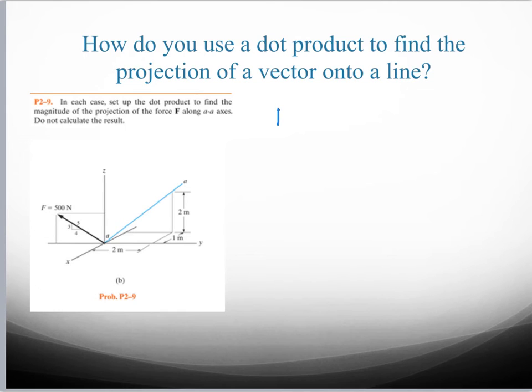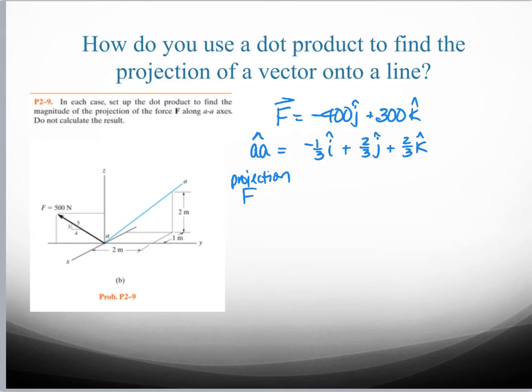And the projection of the force along the line AA can be given by the force dotted with that unit vector. So let's take a look at that. So our force was minus 400 j plus 300 k. And AA unit vector was minus 1/3 i plus 2/3 j plus 2/3 k.